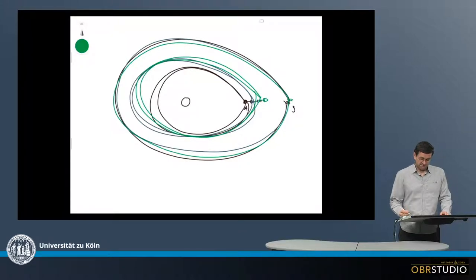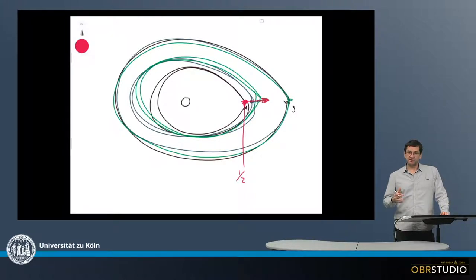The result is that the asteroid initially was here and over time moved out here. So if this is the 1 to 2 resonance here, this orbit is emptied by this process.